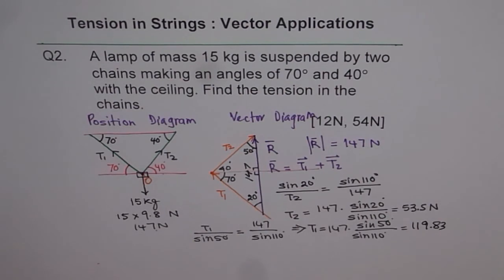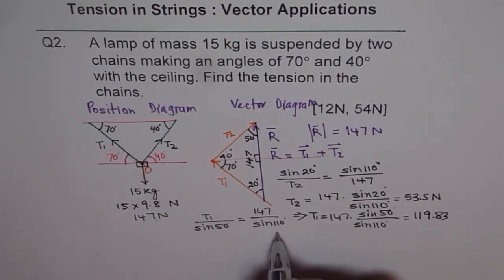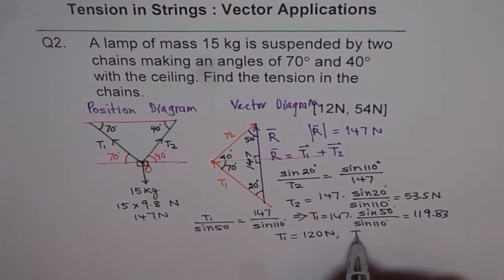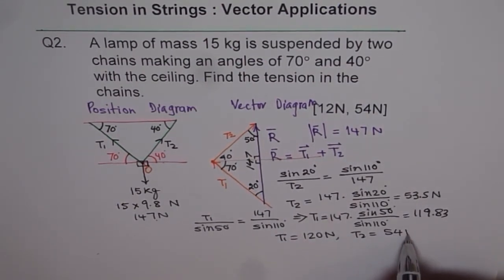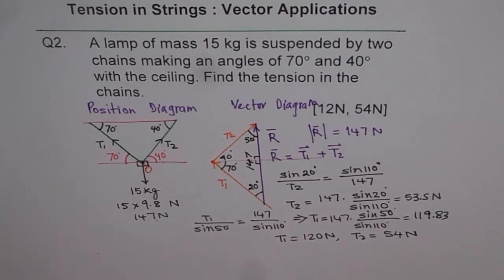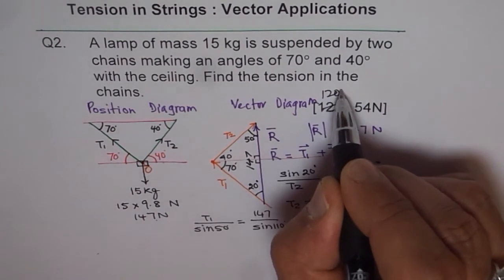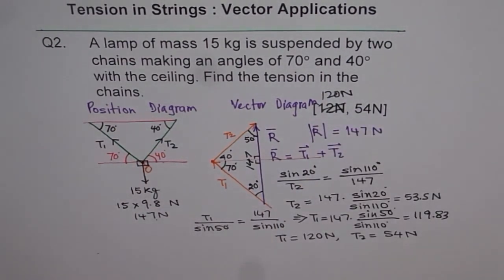Now we can write down our answers: T1 equals 120 Newtons and T2 equals 54 Newtons. The answer given previously was slightly off — it should be 120 Newtons. That is how we solve this kind of question. I hope you understand the concept and how to draw the position diagram and vector diagram to get our answer. Thanks and all the best — see you next time.